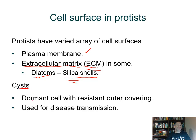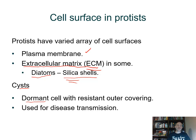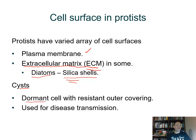Some protists produce cysts that allow them to remain dormant when times are difficult. In some cases, these structures may transmit organisms that cause disease. Since most are single-celled organisms living in water or very moist situations, when things dry up in their environment, they form this protective cyst that allows them to weather the difficult period until water returns.